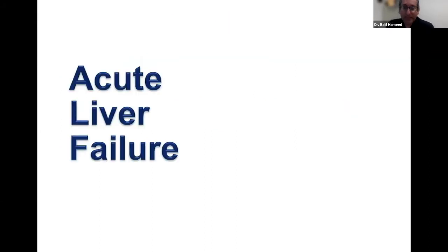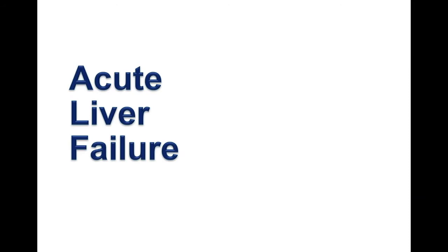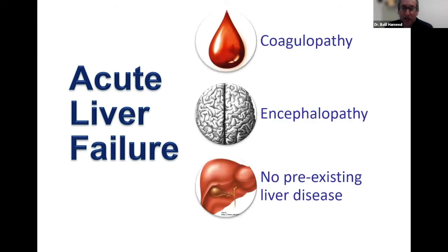What is acute liver failure? These are patients who have no underlying liver disease — no history of liver disease or cirrhosis — who were perfectly healthy individuals and developed three things. One is coagulopathy, which is an INR greater than 1.5, an important function of the liver.